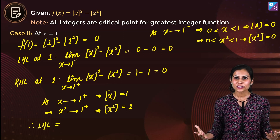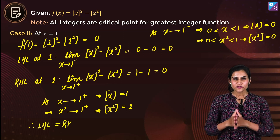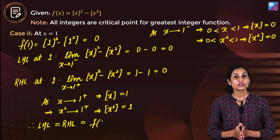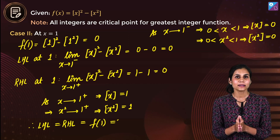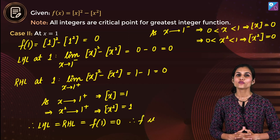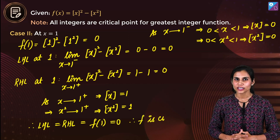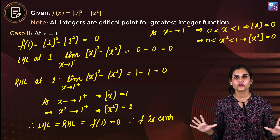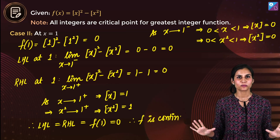Congratulations! The left hand limit at 1 equals the right hand limit at 1, which also equals the value of the function at 1. Everything is 0 — so the function is continuous at 1.